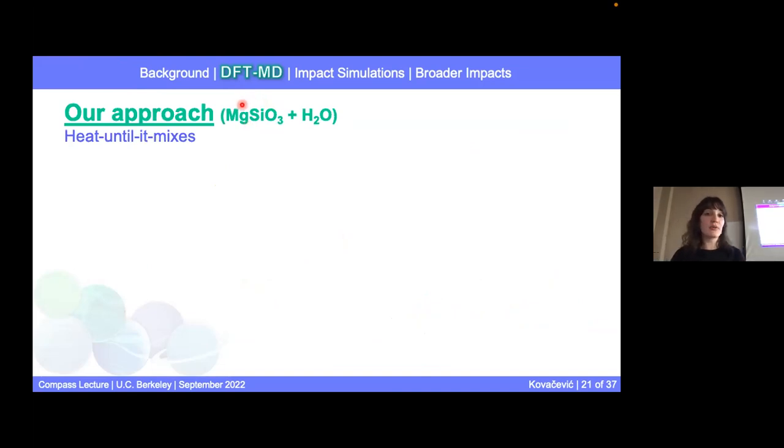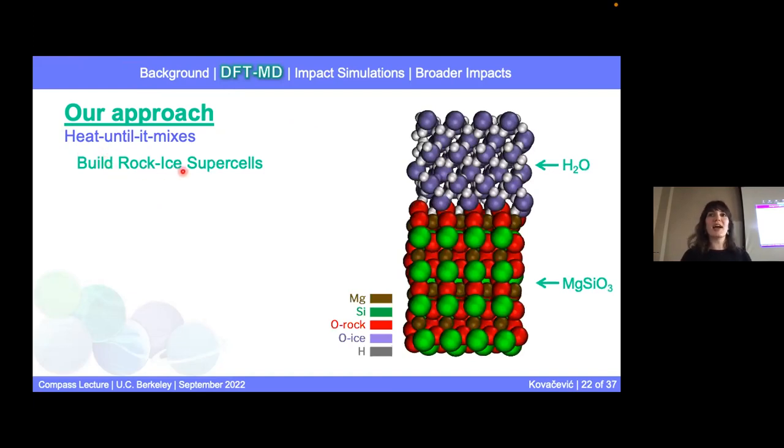So to remind everyone, I'm interested in MgSiO3 and H2O water ice for our simulations of this rock ice mixing. And then we'll be using this heat until it mixes approach. So let's explain to you what that is now. First, we build our rock ice supercells. So that's kind of the step one. We need to give initial configuration of atoms.